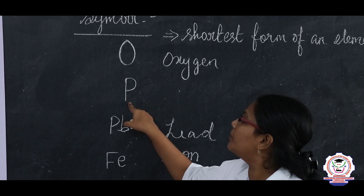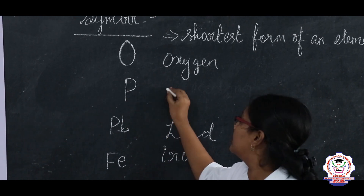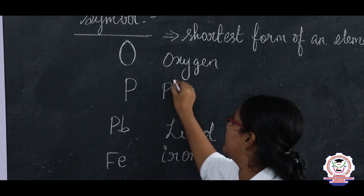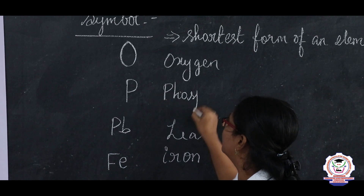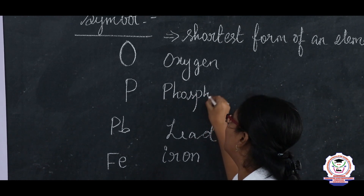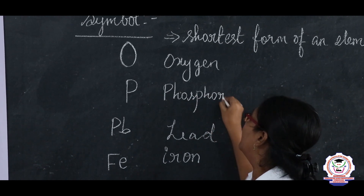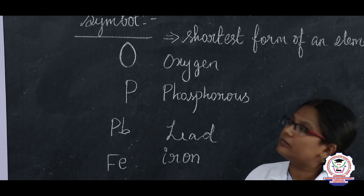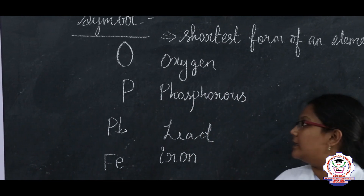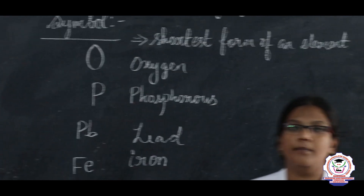What does P represent? Phosphorus. We have discussed about symbols.